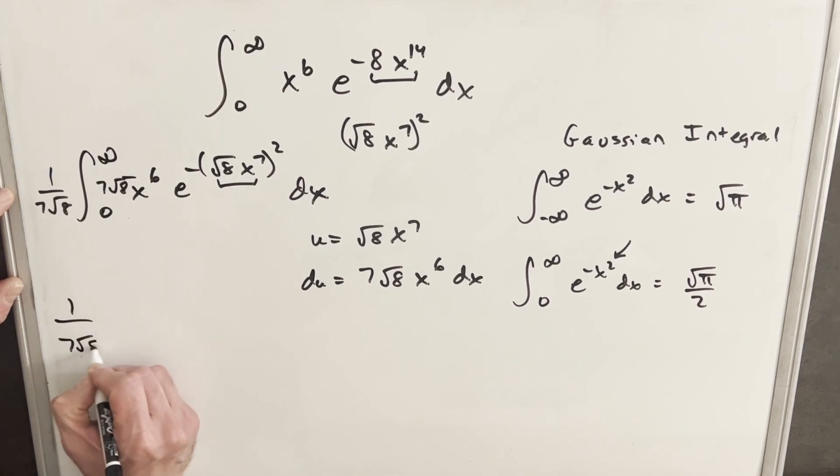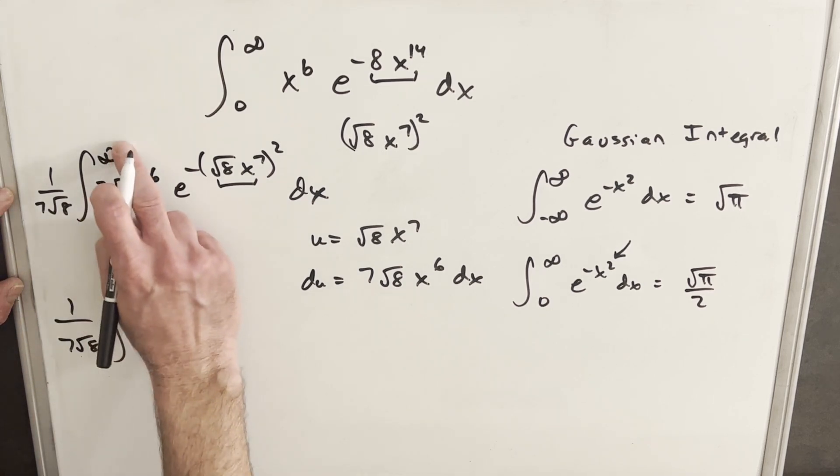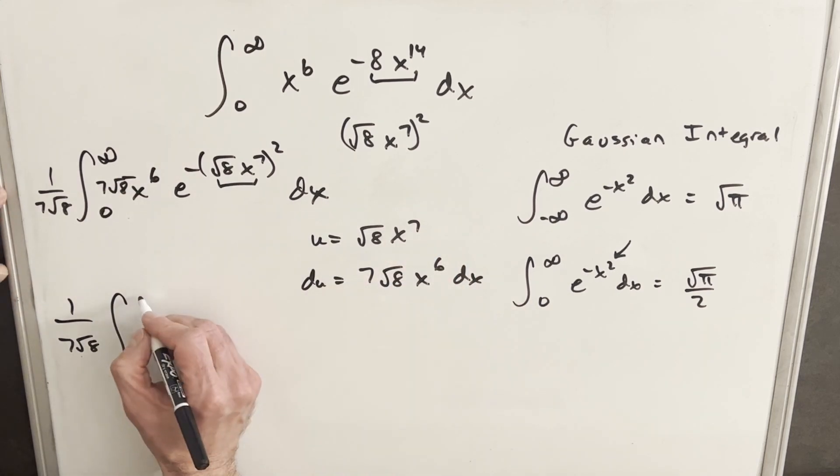So we'll have 1 over 7 square root of 8. We'll plug infinity in here. Infinity to the 7th is infinity. 0 to the 7th is 0, so that doesn't change at all, which is great.